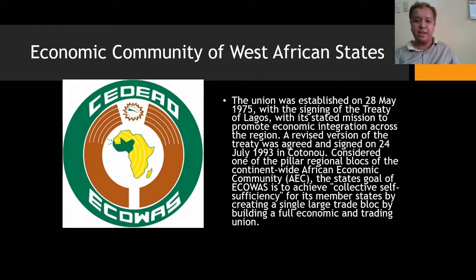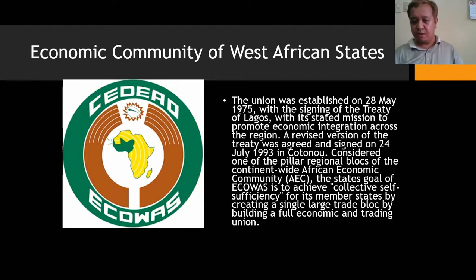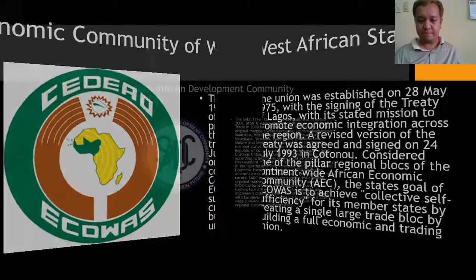The Economic Community of West African States, ECOWAS, was established on May 28, 1975, with the signing of the Treaty of Lagos, with a stated vision to promote economic integration across the region. A revised treaty was signed on July 24, 1993 in Cotonou. Considered one of the pillars of the continent-wide African Economic Community, ECOWAS aims to achieve collective self-sufficiency for its member states by creating a single large trade block and building a full economic trading union.